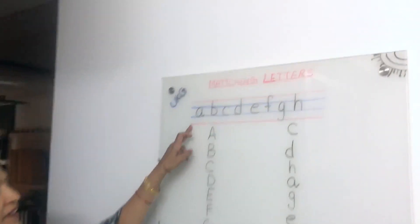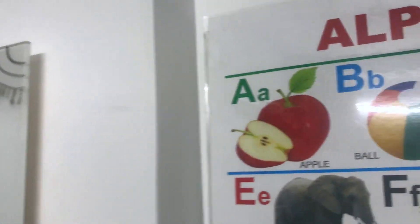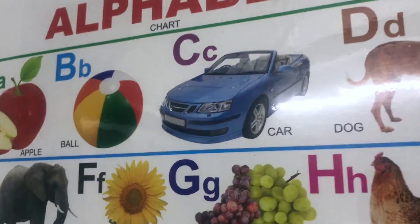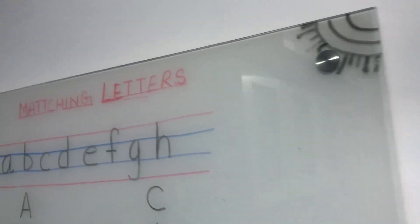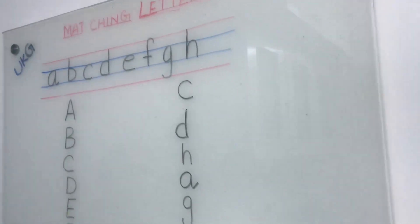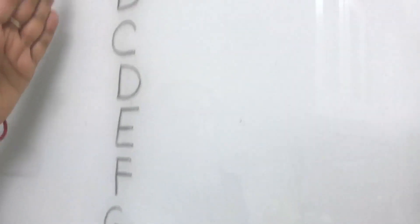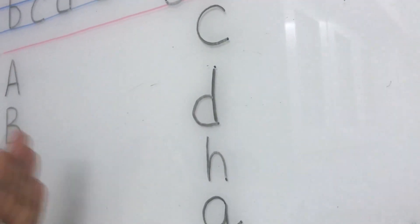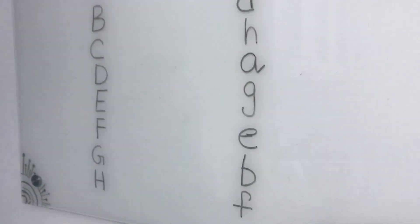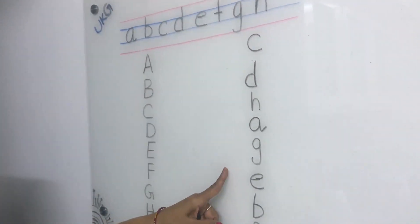Children, we have learnt small letters A to H, and we learnt letters to pictures also. We have revised them. Now we are going to learn letter-to-letter matching. Here capital letters are there and small letters are also there. We have to see the capital letter, identify the small letter, and match capital letter to small letter.